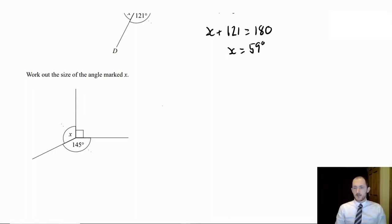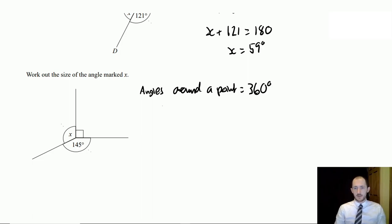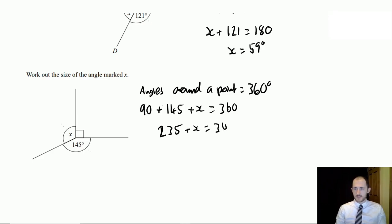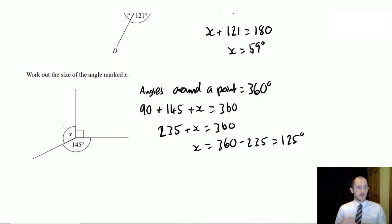The next one is angles around a point, which add to 360 degrees — basically two lots of 180. In this question, we have that right angle (90 degrees) plus 145 degrees plus x should give 360. So 90 plus 145 is 235 degrees, plus x equals 360, meaning x equals 360 minus 235. You need to know the properties and use them to work out answers.